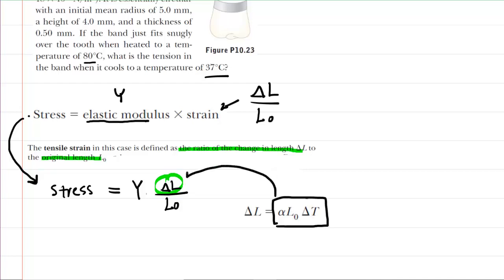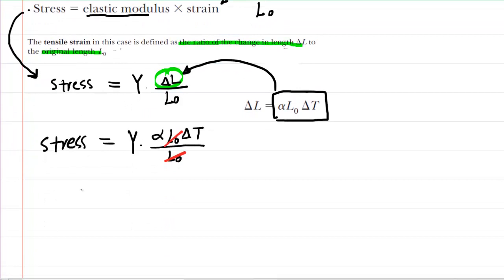We're going to substitute this expression in for the change in length. So now we can write stress is equal to the Young's modulus multiplied by alpha times the original length times the change in temperature, and this is still divided by the original length. What's convenient here is the original length will actually algebraically cancel out. So we're left with a very handy equation: the Young's modulus times the coefficient of linear expansion times the temperature change. What we're going to do next is plug in the given values.